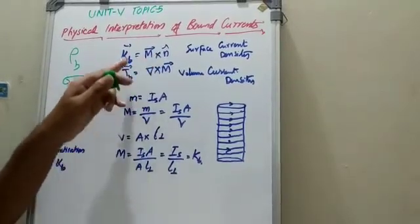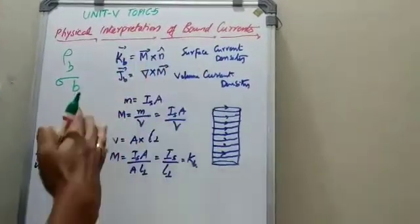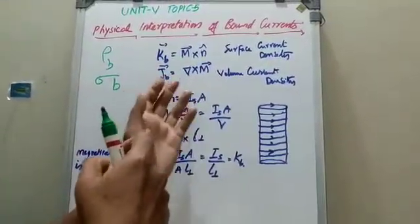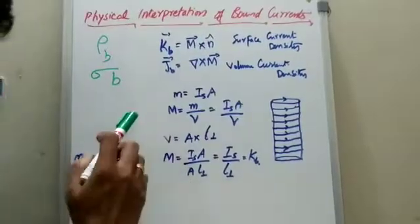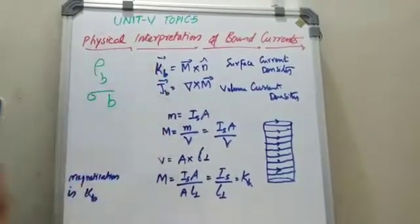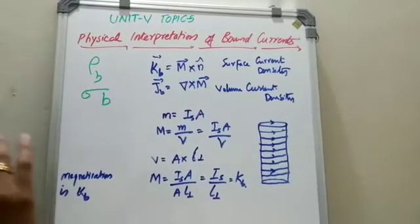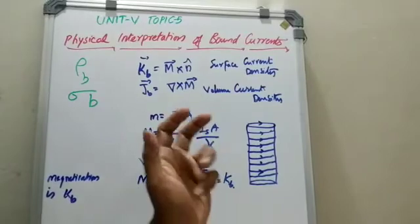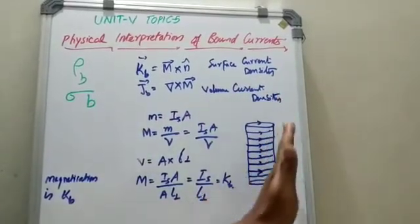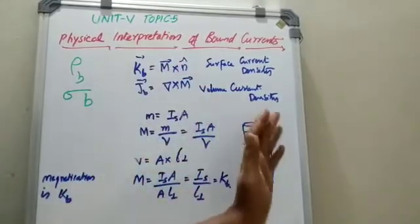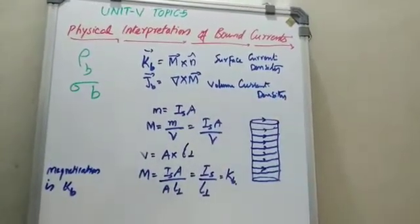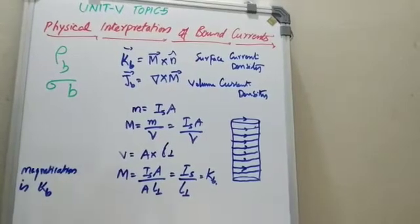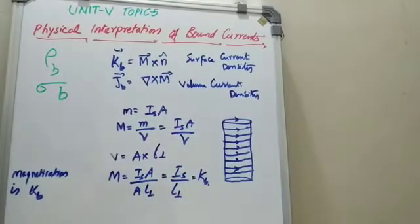For the surface current density physical interpretation, if the magnetization is uniform, the current in the tiny loop of each atom tends to cancel out, with no effective current inside the material. But at the periphery, there is a net surface current density in a loop of area of the structure.